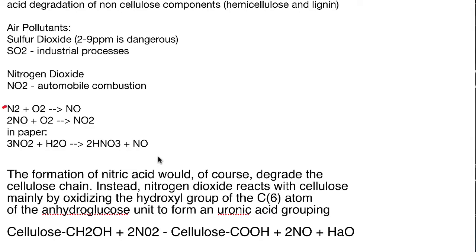Nitrogen dioxide comes from automobile combustion. Nitrogen from the air combines with oxygen in your vehicle to make nitrogen monoxide (NO), and two NOs combine with more oxygen to make NO₂. That NO₂ travels in the air and once it gets on paper, three NO₂ molecules mix with water to make nitric acid and more nitrogen monoxide. This is another source of acidity — if you see a lot of yellowing, that's probably what you're seeing.